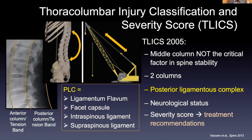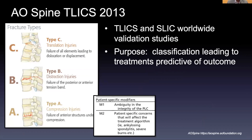Lower points mean you can potentially wait and see or try conservative management. Another variant is the AO spine criteria — there are many different grading scales for thoracolumbar injuries. TLICS is more clinically oriented, while AO spine is more morphology oriented, though more papers are coming out to convert clinical significance to the morphologies of the injuries.